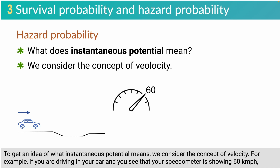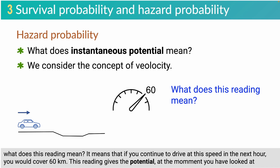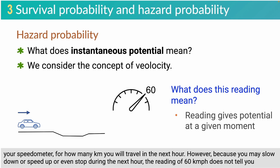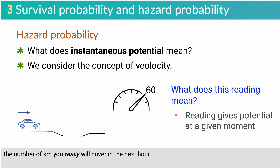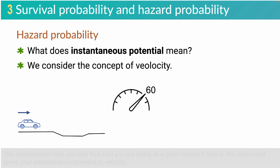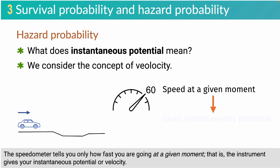To get an idea of what instantaneous potential means, we consider the concept of velocity. For example, if you are driving your car and you see that your speedometer is showing 60 km per hour, it means that if you continue to drive at this speed for the next hour, you would cover 60 km. This reading gives the potential at the moment you looked at your speedometer. However, because you may slow down, speed up, or even stop during the next hour, the reading of 60 km per hour does not tell you how many km you will really cover. The speedometer tells you only how fast you are going at a given moment — that is, the instrument gives instantaneous potential or velocity.